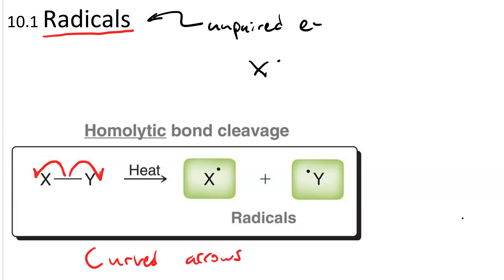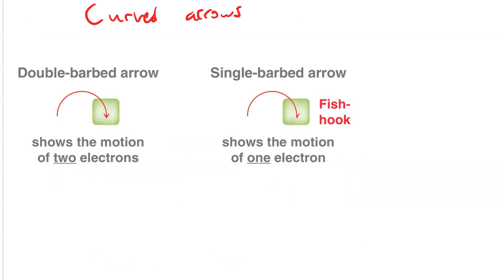Note that the curved arrows used in radical processes are different from the ones used in polar processes. On the left, we have a double barbed arrow. This is the kind that we've used so far in polar processes, signifying the movement of two electrons.